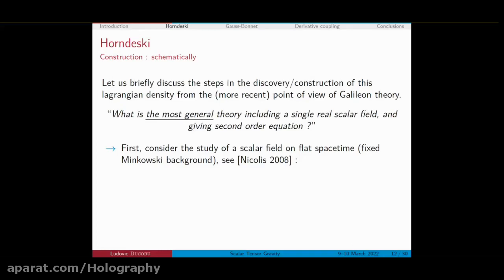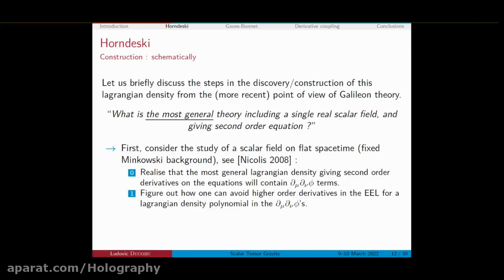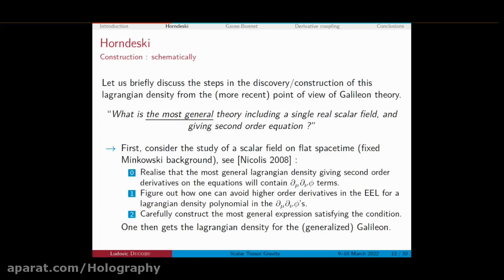Let me comment on the construction of this Lagrangian in the context of the Galileon theory. The idea was first to consider a scalar field on flat spacetime, studied in a paper by Nicolis and collaborators. Even though you want second-order field equations, you have to deal with second-order derivatives of your scalar field in your Lagrangian. You must find the most general expression satisfying all required conditions. This gives the Galileon theory, which can be generalized to the generalized Galileon theory — still on flat spacetime.